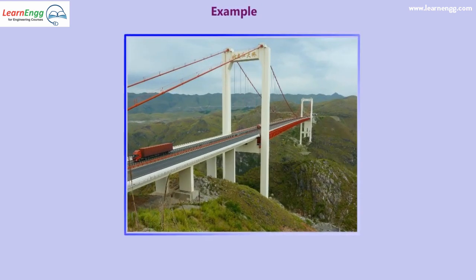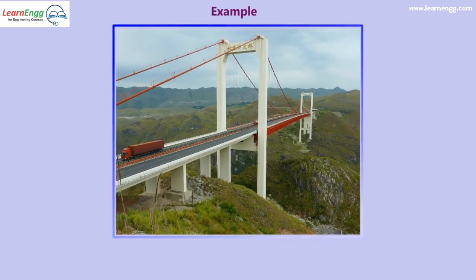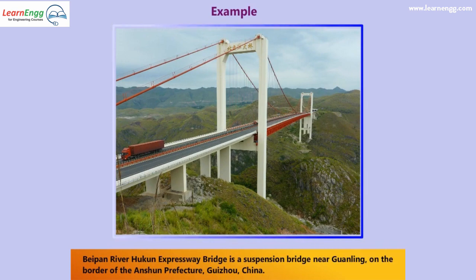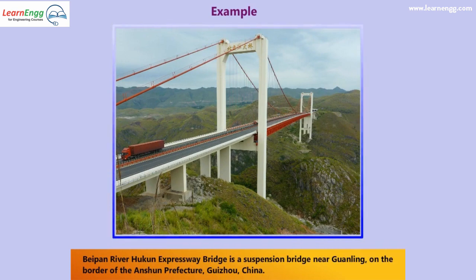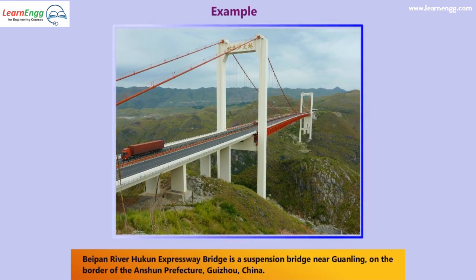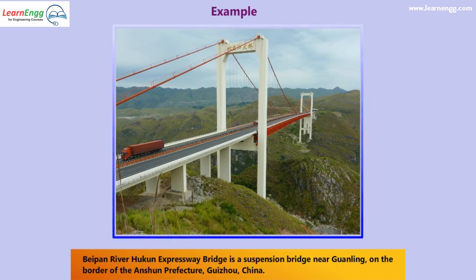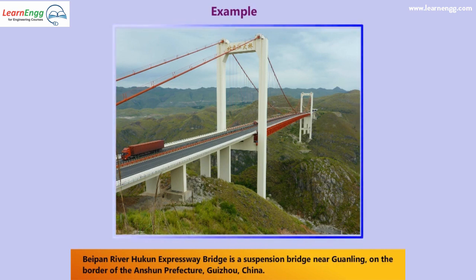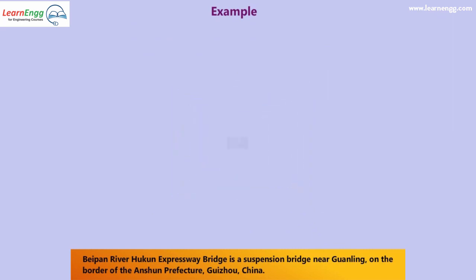Let us see some examples of suspension bridges. The Biapan River Hukun Expressway Bridge is a suspension bridge near Gunling, on the border of Anshun Prefecture, Guizhou, China.